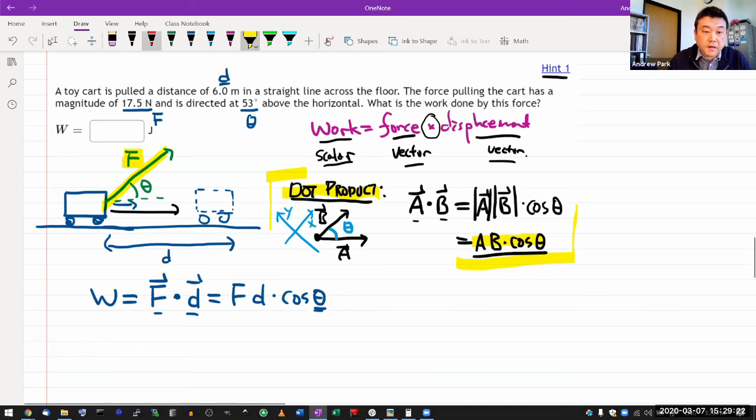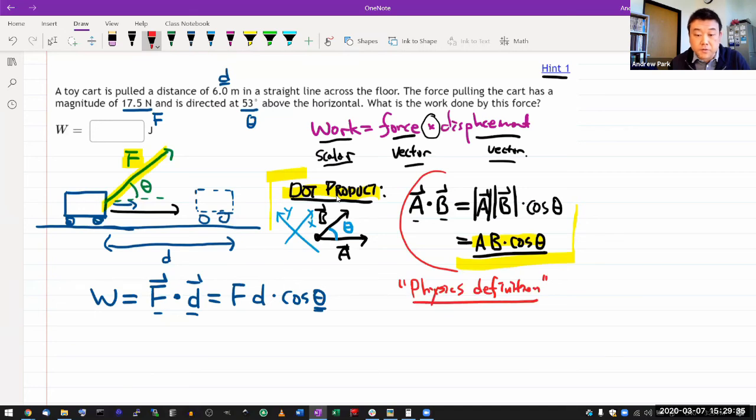So this is what I have presented here, is what I like to call physics definition. And I guess the difference between physics definition and the component definition of dot product is, physics definition is very easy to present in this geometric way, without ever having to define an axis. When you're using the component definition, you have to define an axis, because you need a component.